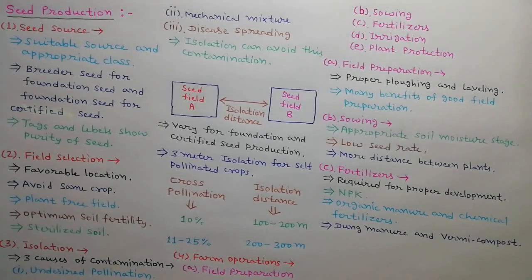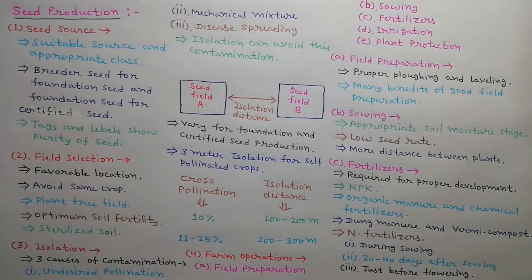Dung manure and vermicompost are organic manures which should be given in the field before 1 month of sowing. Nitrogen fertilizers should be given for 3 times: during sowing, 30 to 40 days after sowing and just before flowering. PK fertilizers should be given for only once before sowing or during the sowing.